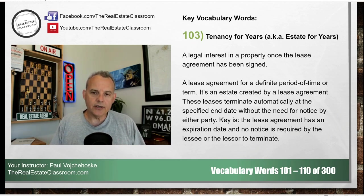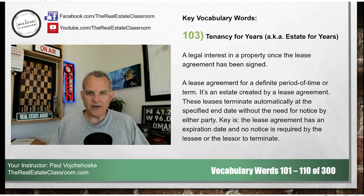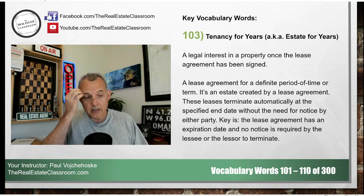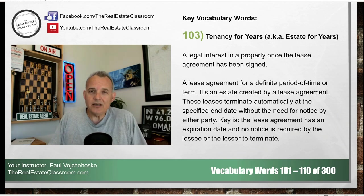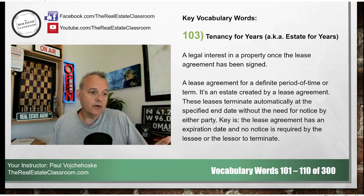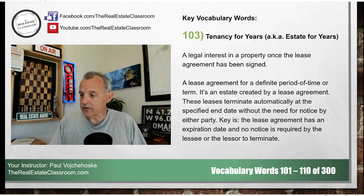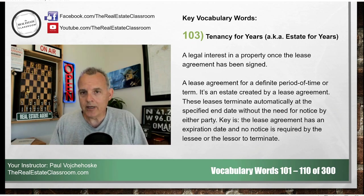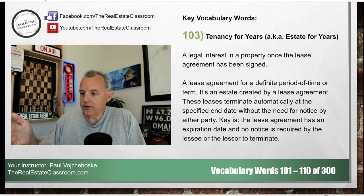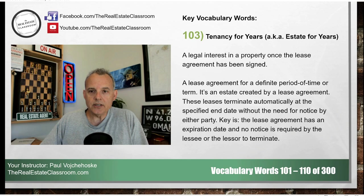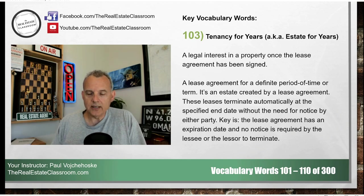The key with tenancy for years is that the lease agreement has a fixed expiration date. The most common in residential is a one-year lease, but it doesn't have to be — it could be three months, six months, or two years. The tenant is allowed to stay under that lease agreement until the fixed expiration date. That's the key under tenancy for years.